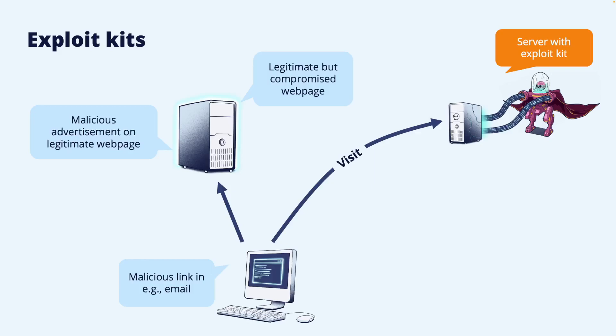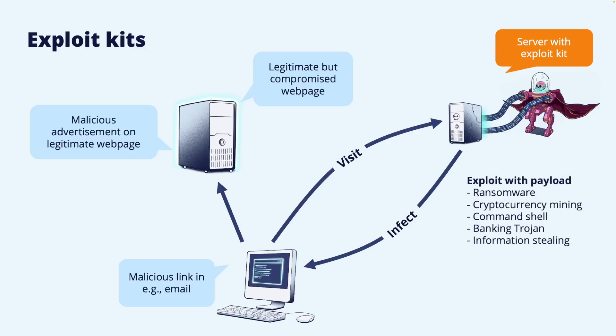Once the victim computer has made contact with the malicious server, the victim computer is checked for vulnerabilities supported by the exploit kit, and if it is vulnerable, an exploit is launched. Assuming the vulnerability allows arbitrary code execution, there are a range of payloads to choose from. Common payloads are ransomware programs and cryptocurrency miners, or it could open a command shell, be a banking trojan that steals money or changes destination accounts for payments, or scan the computer for sensitive information and send it back to the adversary.